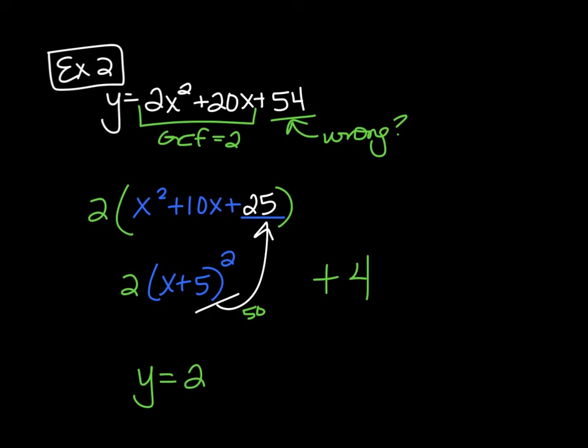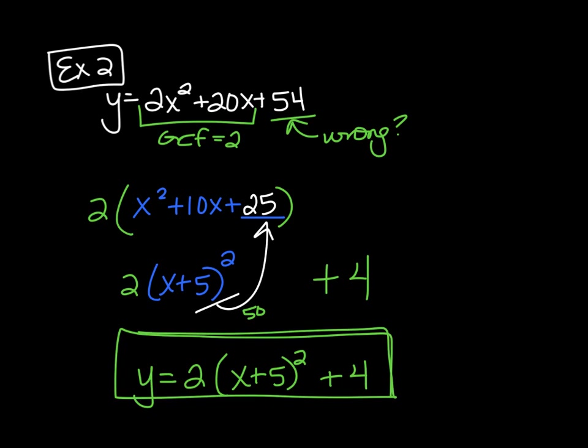So my final answer in vertex form is going to be y equals 2 for the GCF, x plus 5 squared, because I took half, plus 4. And this is now our vertex form. I hope that helps for today.